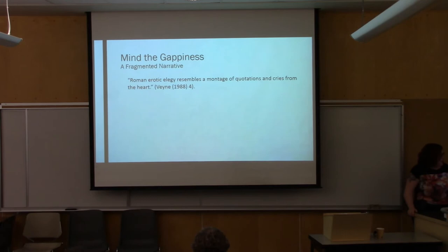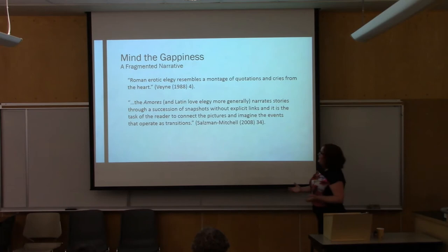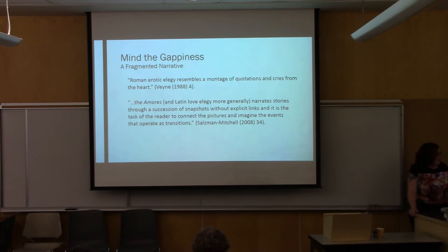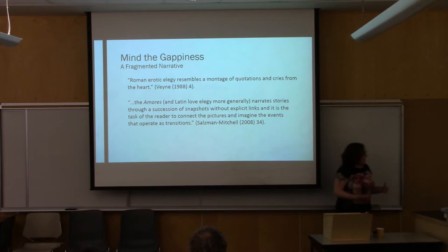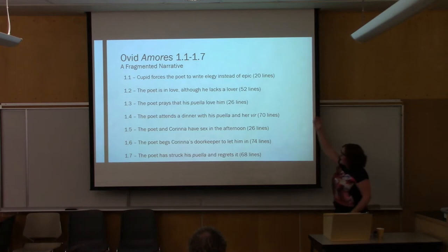Vane in the 1980s wrote that Roman erotic elegy resembles a montage of quotations and cries from the heart — this was really the prevailing attitude toward Latin elegy. More recently, other scholars have been looking at this. And in 2008, Salzman-Mitchell described the Amores and Latin love elegy more generally as narrating stories through a succession of snapshots without explicit links, where it is the task of the reader to connect the pictures and imagine the events that operate as transitions. Now, that sounds an awful lot like comics.